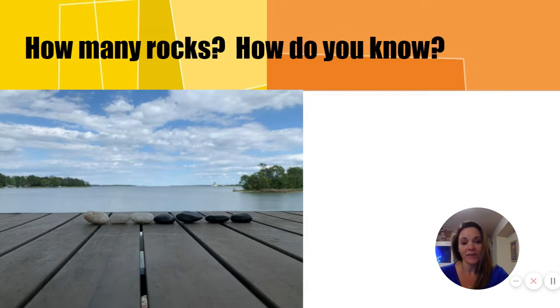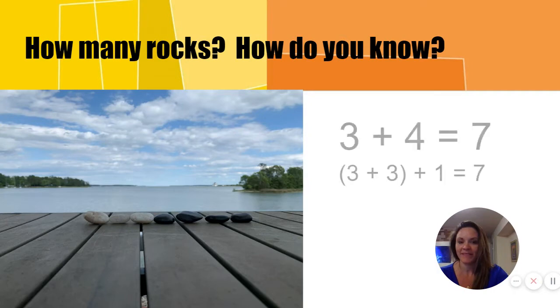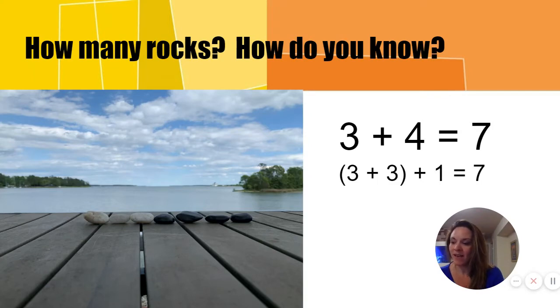Now how many rocks are there and how do you know? There are seven rocks. Three white rocks and four black rocks make seven rocks. There's one more black rock than there was in the previous picture. If we know three and three is six, we know three and three and one more makes seven.